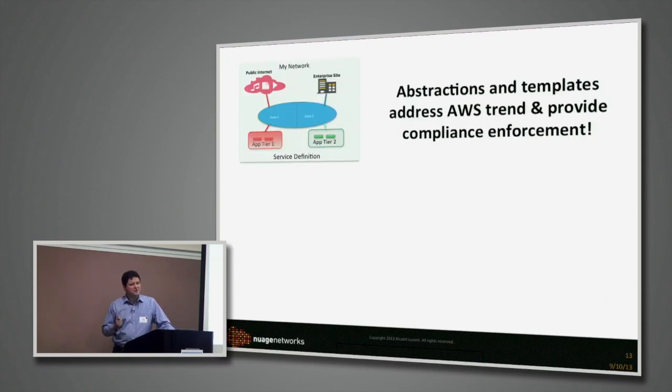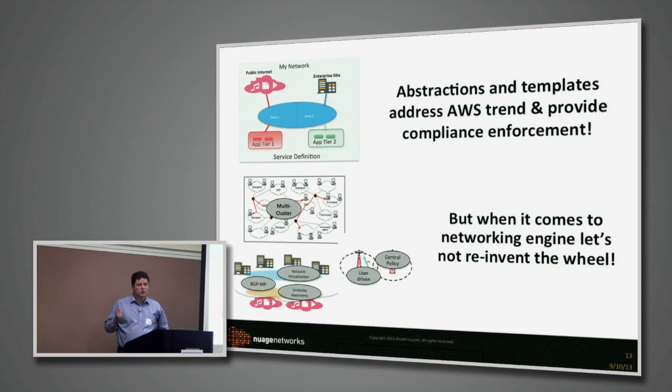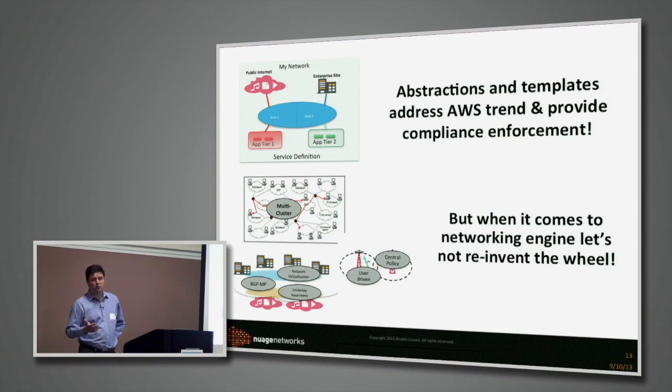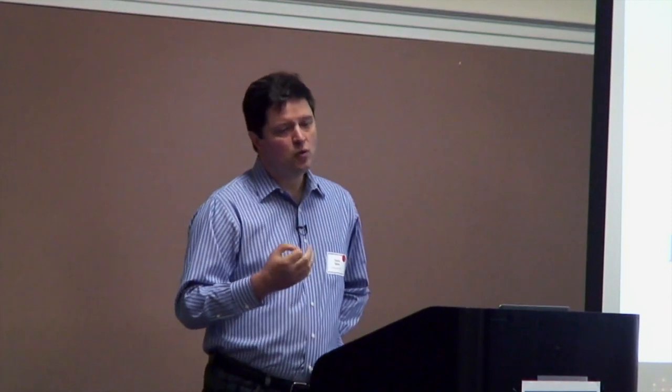In summary, abstractions and templates emulate the AWS service consumption model very closely. When it comes to the networking engine, it's important to reuse what we learned from the past and avoid past mistakes. We can provide virtual network domains that span multiple clusters and the wide area network — the building blocks being network virtualization, underlay awareness, and multi-protocol BGP. For instantiating and moving networking for many volatile endpoints, user-driven connectivity and a centralized policy module enable that, allow compliance enforcement and monitoring, save costs, and increase service velocity and end-user consumption of networking services.